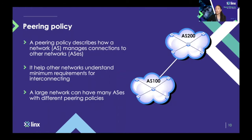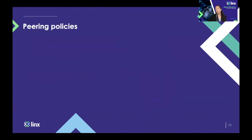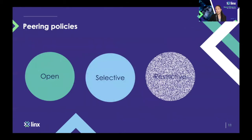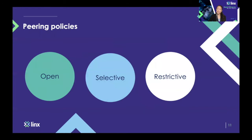If you're a very large provider, you might have several different networks that each have different peering policies, depending on the needs and how you use those networks. Peering policies normally fall into three categories: open, selective, and restrictive.